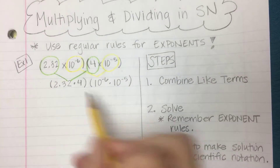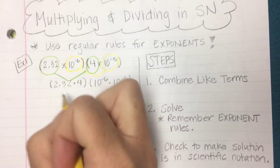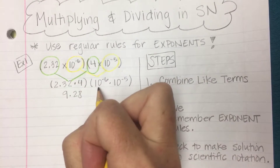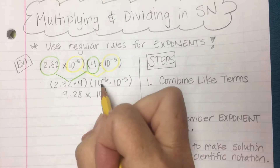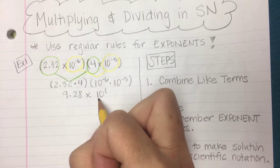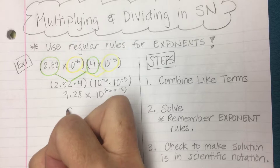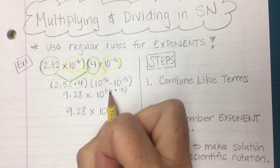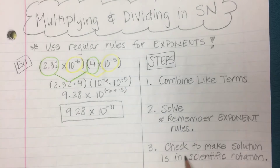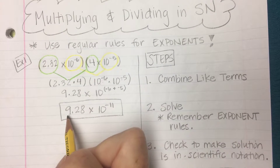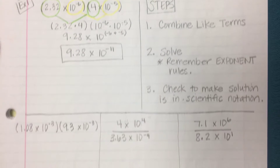Now I start to solve. For the regular numbers, 2.32 times 4 is 9.28. Then 10 to the negative 6 times 10 to the negative 5th — remember, when multiplying numbers with exponents, we keep the base and add our exponents — gives us 10 to the negative 6 plus negative 5, which is negative 11. So the answer is 9.28 times 10 to the negative 11. Checking step 3, I have one number to the left of the decimal, so it is in scientific notation and I'm done.